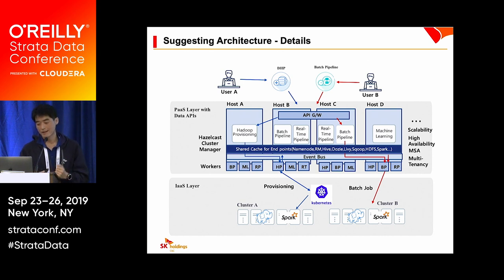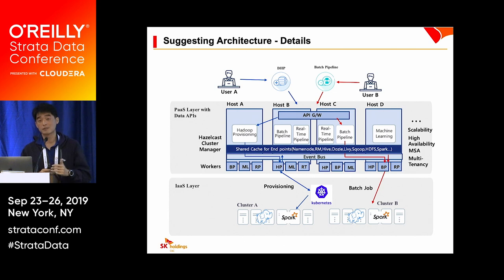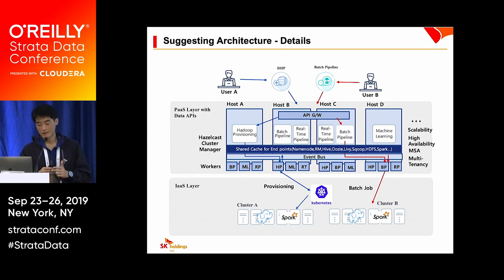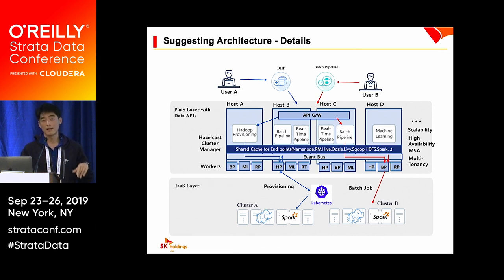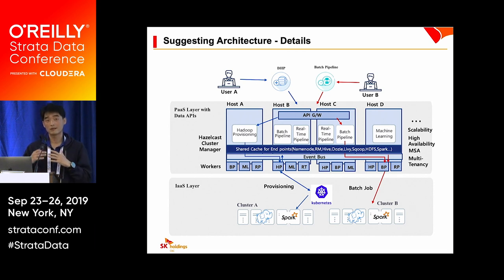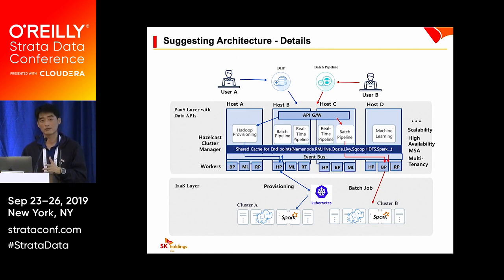Here is a simple scenario. User A creates a Hadoop cluster A and requests the DHP service, shown by the blue line. The request is passed to the Hadoop provisioning module, which sends it to one of the HP workers. This worker sends the request to Kubernetes, and Kubernetes deploys Hadoop clusters with a number of Hadoop components. Kubernetes returns the endpoints to the workers, and the worker caches them into the shared cache so other workers on other hosts can use those endpoints for other services.